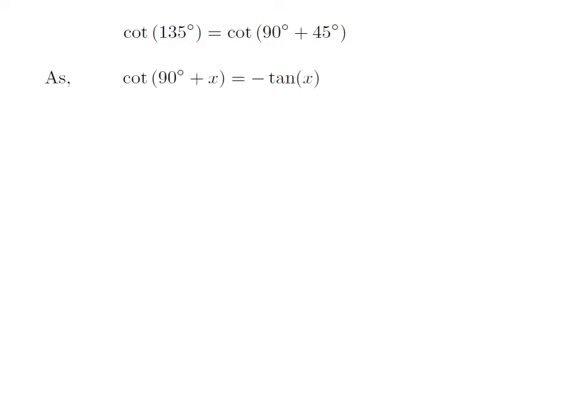As we know, the trigonometry identity cot 90 degree plus x is equal to minus tangent of x.